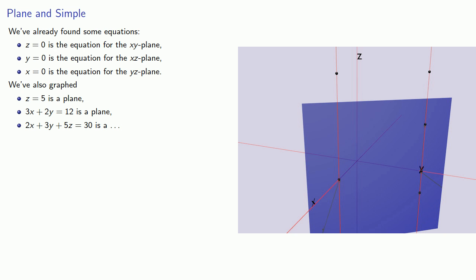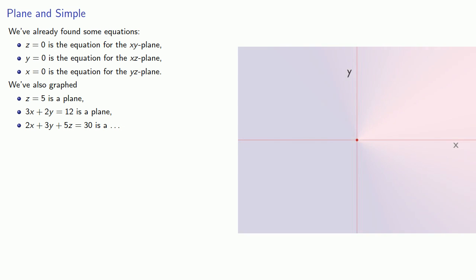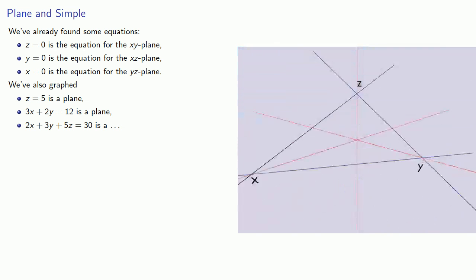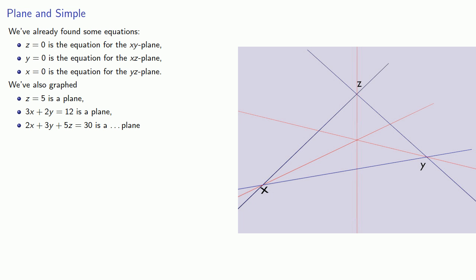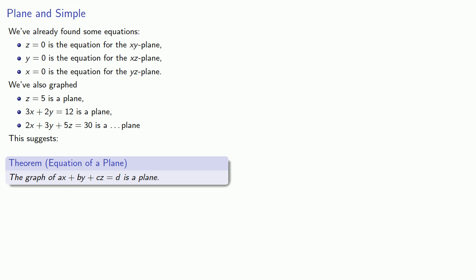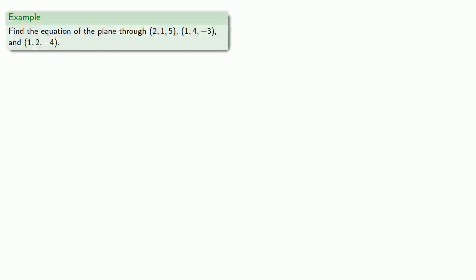2x plus 3y plus 5z equals 30. Well, when we graphed it, we saw that it looks something like this, which also suggests that it's a plane. And this suggests the following. The graph of ax plus by plus cz equals d is a plane. So let's find some equations. Well, you know from geometry that we need three points to specify a plane. So let's find the equation of the plane through these three points.